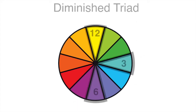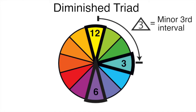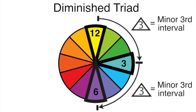The diminished triad is a minor third interval followed by another minor third interval. This interval sequence can be started from any root note.